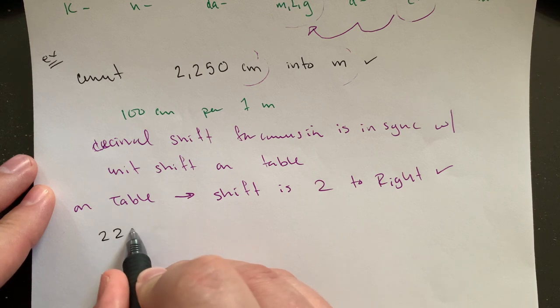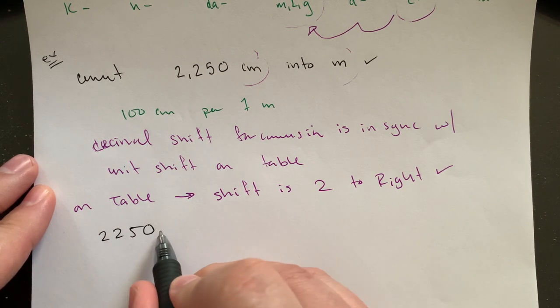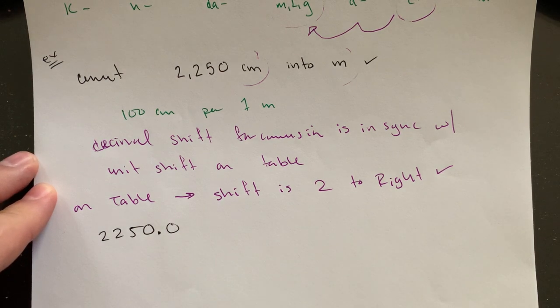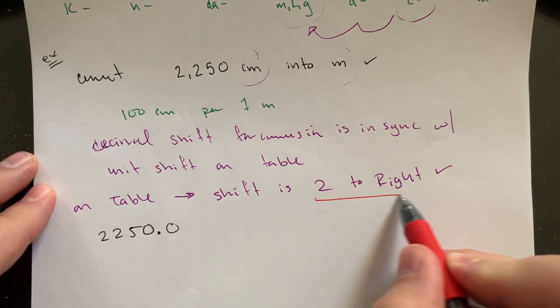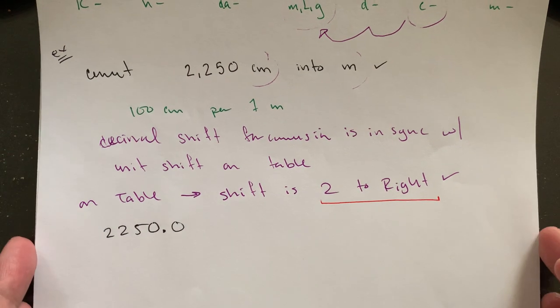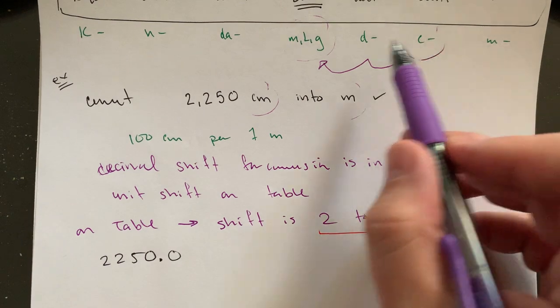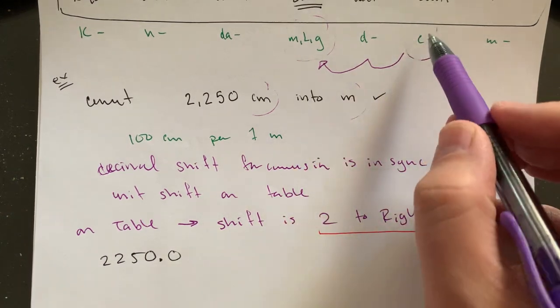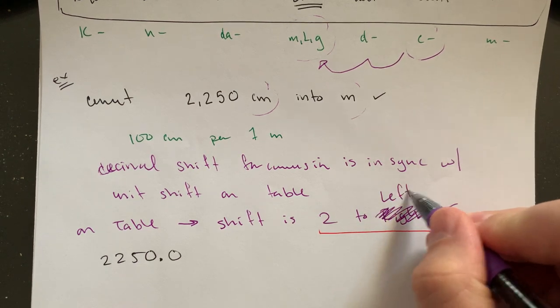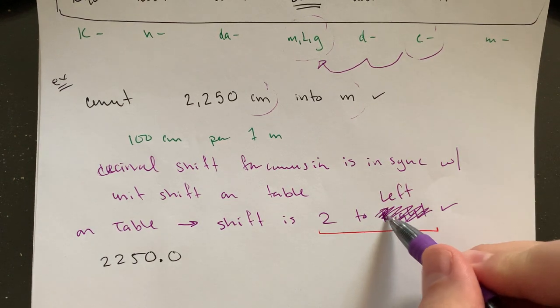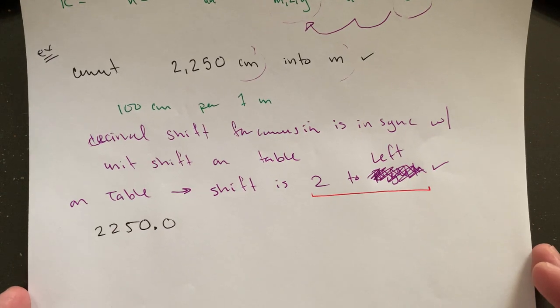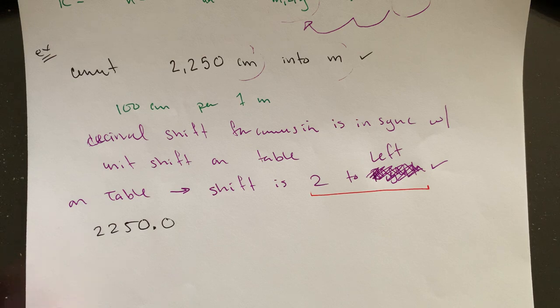So on the table, the shift is two to the right. And so what that means for my unit conversion is I'm going to take 2250 and shift my decimal twice to the right—oh my gosh, I said right. I'm sorry, I misspoke. We're moving to the left, right? Centimeters is here, we're moving two to the left. That's embarrassing. Got you guys yelling at your screens again—don't you mean left? I definitely mean left.